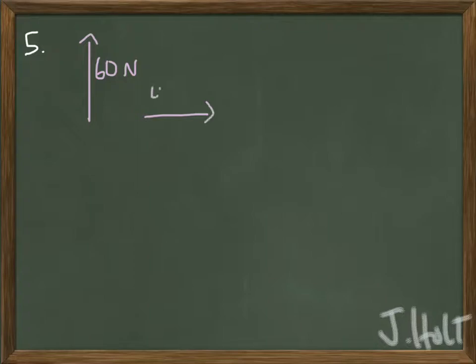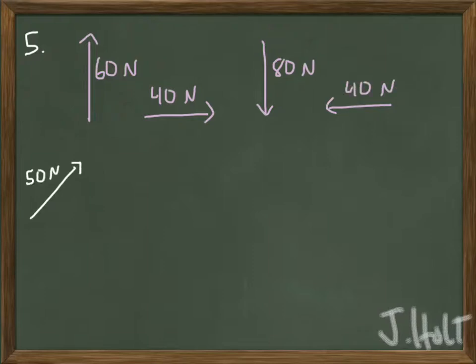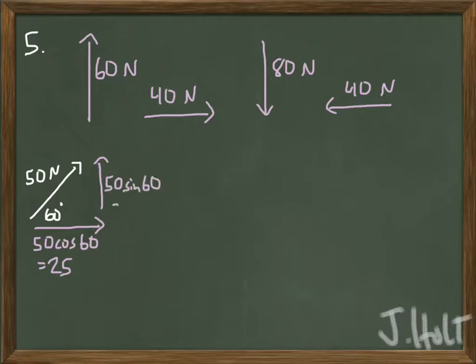Okay, number 5, we're given 5 different forces acting on an object. The first one's in the y-direction, the second one's in the x-direction, the third one's in the y-direction, the fourth one's in the x-direction, but the fifth one is at an angle. So you know what you've got to do. You've got to turn it into its x-component and its y-component. Use the cosine function for the x-component. Use the sine function for the y-component.